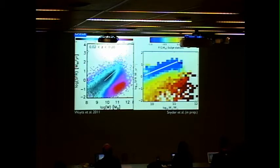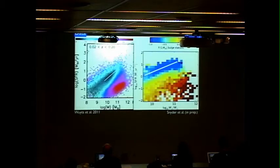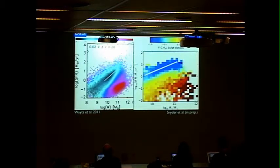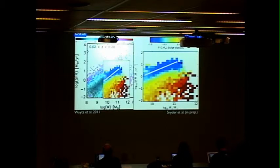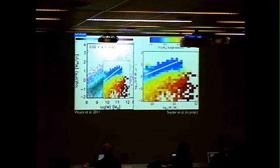We can plot on the same diagram stellar mass versus star formation rate and see the same broad features: the main sequence of star formation, and then the quenched ellipticals off to the right. These two plots have different scales, so I've scaled them to match. You can see where this falls on top of the observations — the separation happens at roughly the same scale in all these variables.